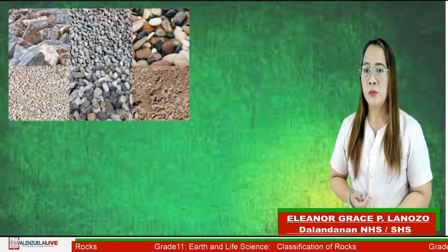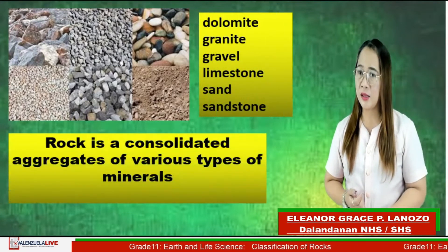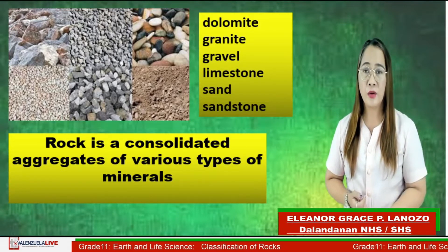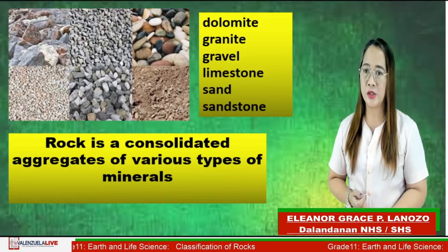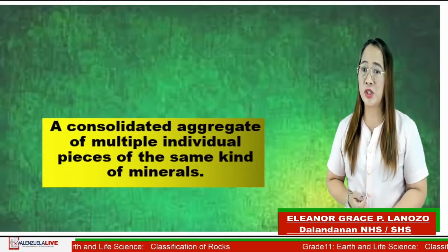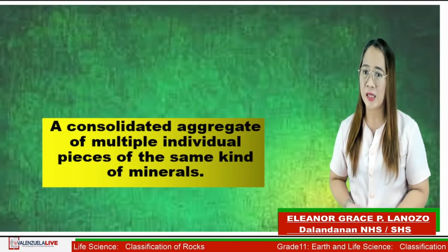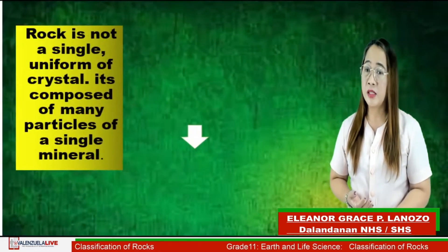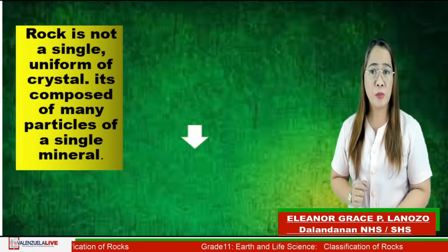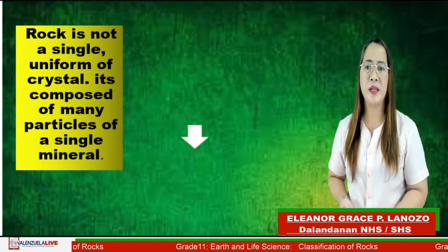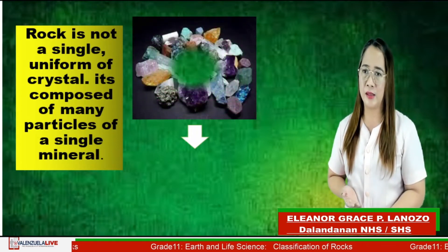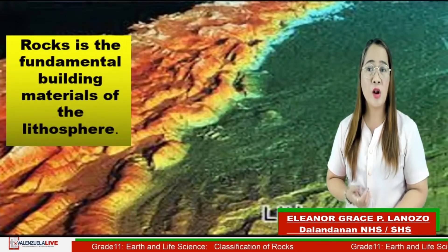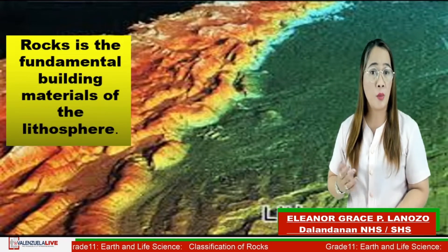Rocks are consolidated aggregates of various types of minerals such as dolomite, granite, gravel, limestone, sand, and sandstone. Rock is also a consolidated aggregate of multiple individual pieces of the same kind of minerals, composed of many particles of minerals. Rock is not a single uniform crystal, but many single minerals compacted together. Rock is also a fundamental building material of our lithosphere.